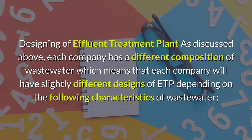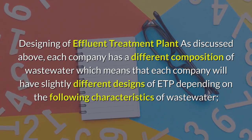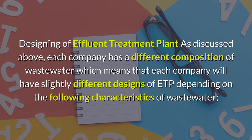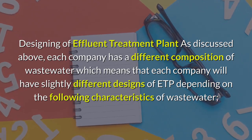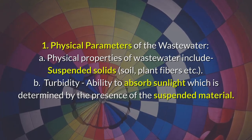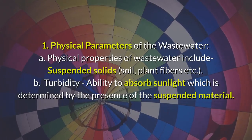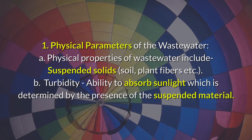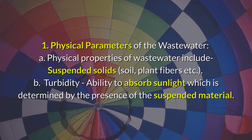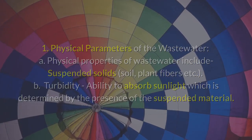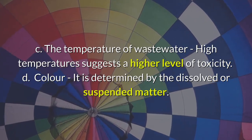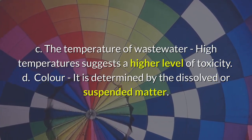Designing of effluent treatment plant: each company has a different composition of wastewater, which means that each company will have slightly different designs of ETP depending on the characteristics of wastewater. The first category is physical parameters. Physical properties of wastewater include suspended solids, soil, plant fibers, etc. Turbidity refers to the ability to absorb sunlight, which is determined by the presence of suspended material. Temperature of wastewater — high temperatures suggest a higher level of toxicity.